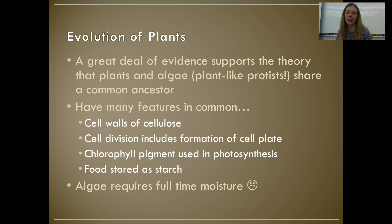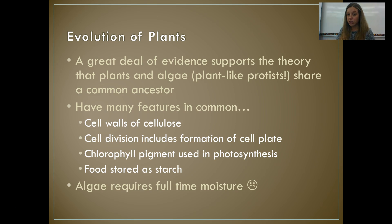Both plant-like protists (algae) and plants have cell walls made of cellulose. During cell division — during mitosis — they have a cell plate that forms and becomes a cell wall. They have chlorophyll, which is a pigment used in photosynthesis, and they store food as starch.